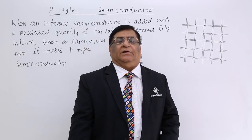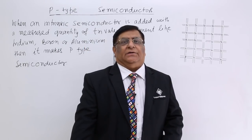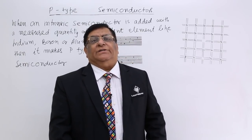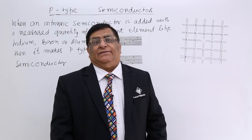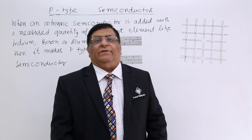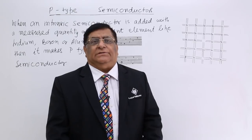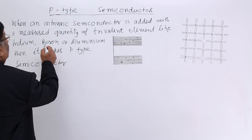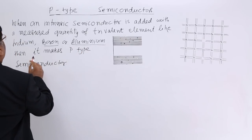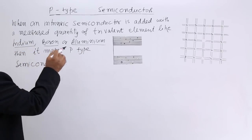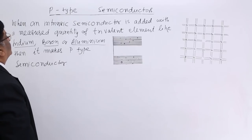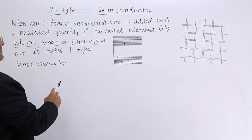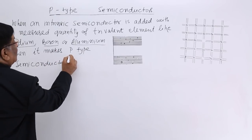The other type of extrinsic semiconductor is P-type. A P-type semiconductor is made by mixing trivalent impurities — elements having 3 electrons in the outermost orbit. These include boron, aluminium, indium, and a few others. So when an intrinsic semiconductor is added with trivalent element impurities, it makes a P-type semiconductor.